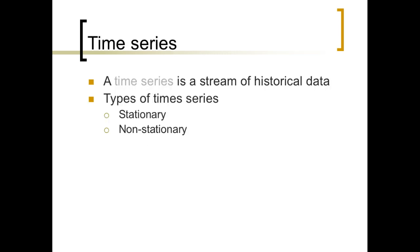A time series is where you use historical data to make a forecast of the future. Within the time series realm we have two kinds: stationary, where there is no repeating pattern in the data or no obvious trend up or down; and non-stationary, where either you exhibit some trend or you see some kind of repeating behavior. Based on what kind of data you have, you might use a different kind of forecasting method.